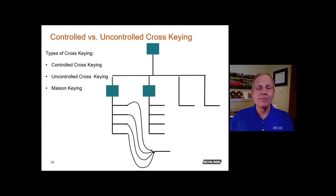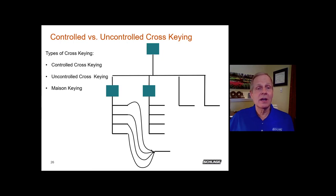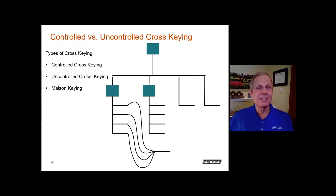If all the change keys under a single master key are operating a cylinder, that would be correct to call controlled cross-keying. You would also be correct calling it Maison keying, because all change keys under a particular master are operating that cylinder. Maison keying is really just a very specific type of controlled cross-keying.